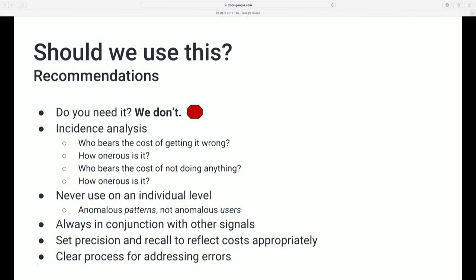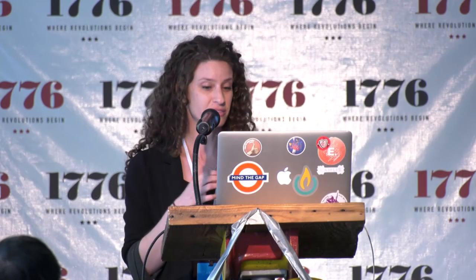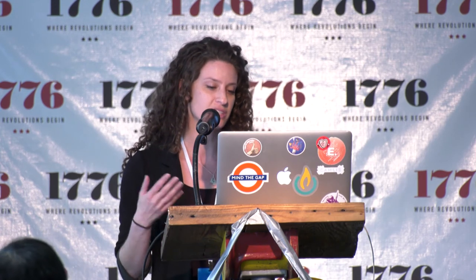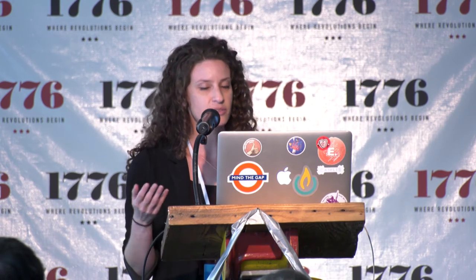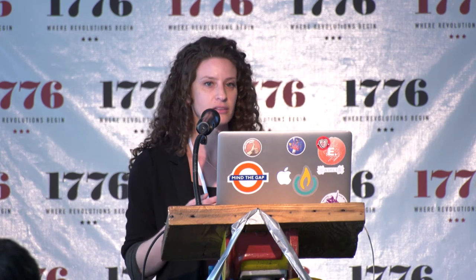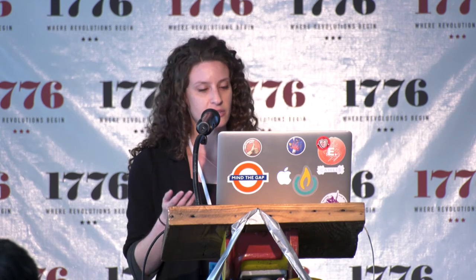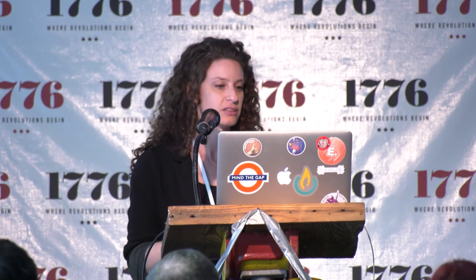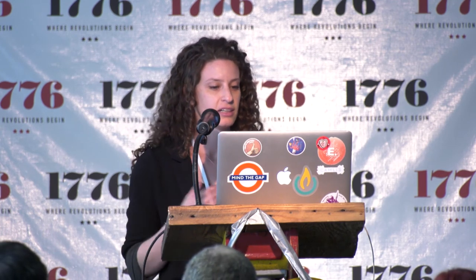Set your precision and recall to reflect the cost of false negatives and positives appropriately. In our case, we don't see much targeted harassment of women users at scale originating from these types of accounts, and we think the risk of demotivating real women users is high. So if we were to use this, we would tune it for very high precision — maybe as close to 100% as we can get — and accept the trade-off of lower recall. Depending on the details of your context, you might weigh these things differently. And a clear process for addressing errors is really important.